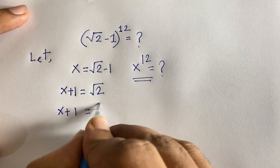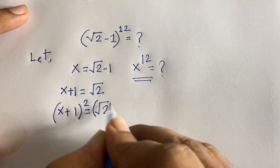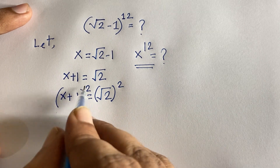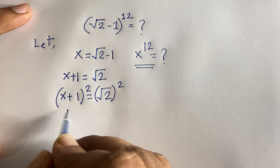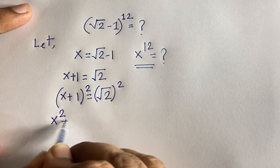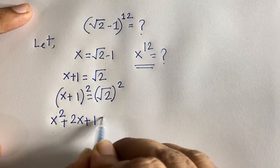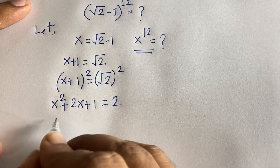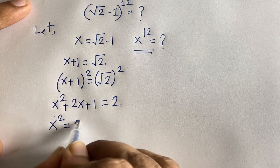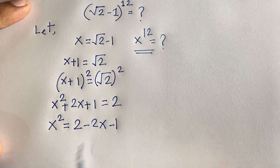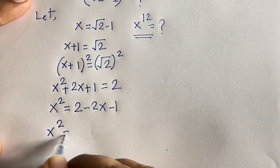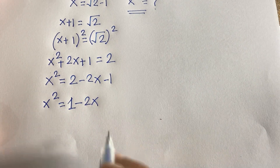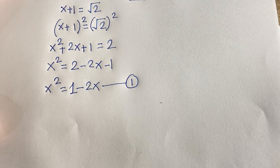So x + 1 = √2. Now I use both sides squared because we want to remove this square root. Using the identity (a + b)² = a² + 2ab + b², I can say it will be x² + 2x + 1 = 2. The square root cancels and we find x² + 2x + 1 = 2, so x² = 1 - 2x. This is our first equation.